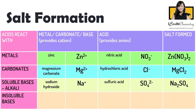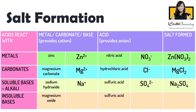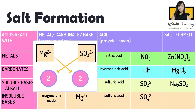Next, we shall focus on the reaction of acid with insoluble base. As mentioned, an insoluble base can be an insoluble metal oxide or metal hydroxide. We'll use sulfuric acid and magnesium oxide as an example. Magnesium oxide provides the magnesium ion, Mg2+, and sulfuric acid provides the sulfate ion, SO4 2-. Using the cross method, we get two Mg2+ and two SO4-. Since the number of cations and anions is the same, we simplify the ratio from 2:2 to 1:1. We need just one Mg2+ to balance the charge of one SO4 2-. Hence, the formula of magnesium sulfate is MgSO4.